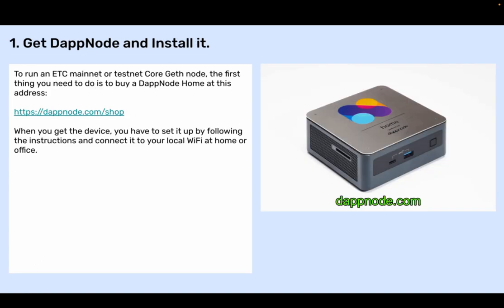Step one: Get DAPnode and install it. To run an ETC mainnet or testnet core geth node, the first thing you need to do is to buy a DAPnode Home at dapnode.com/shop. When you get the device, you may have to set it up by following the instructions and connect it to your local Wi-Fi at home or office.